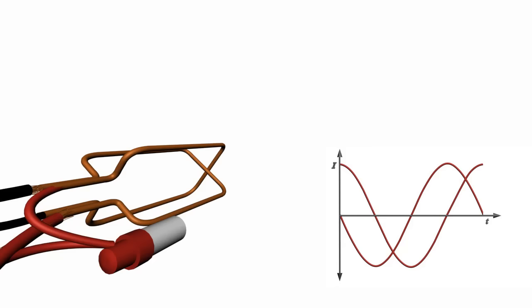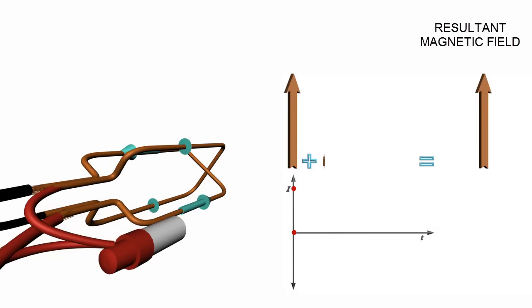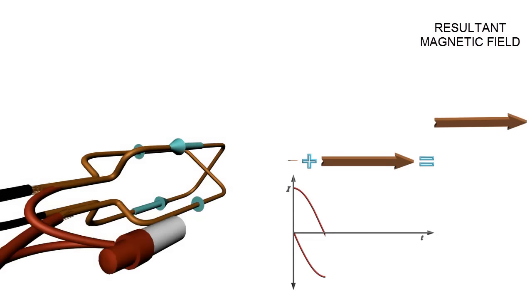Resultant magnetic field is the sum of these two fields. Now note the variation of resultant magnetic field with time. You can note that with time, magnitude of resultant magnetic field remains the same, but orientation changes.